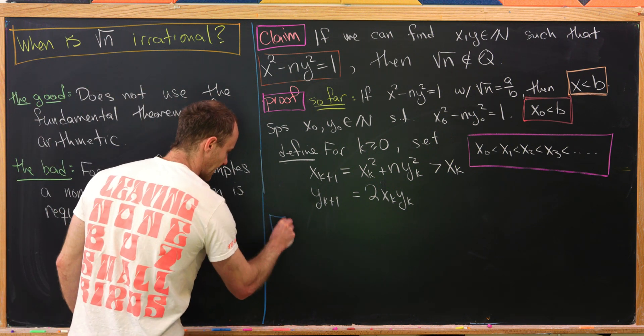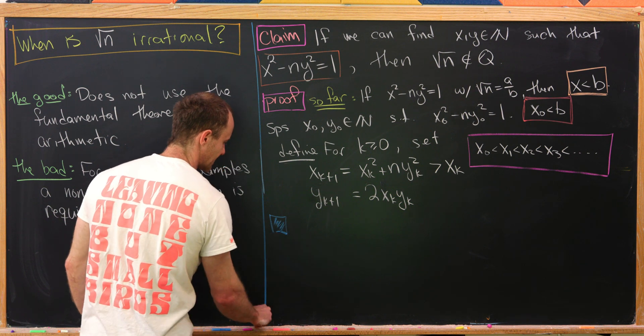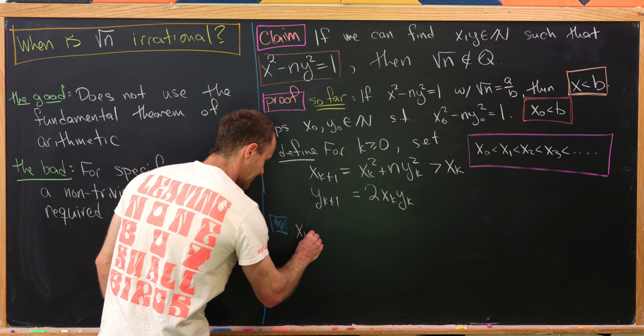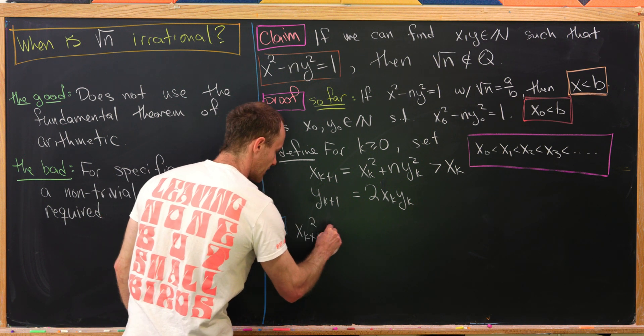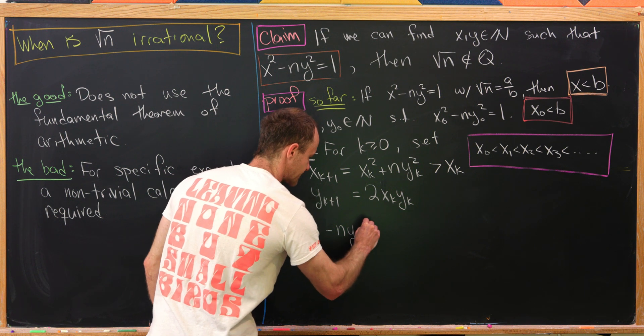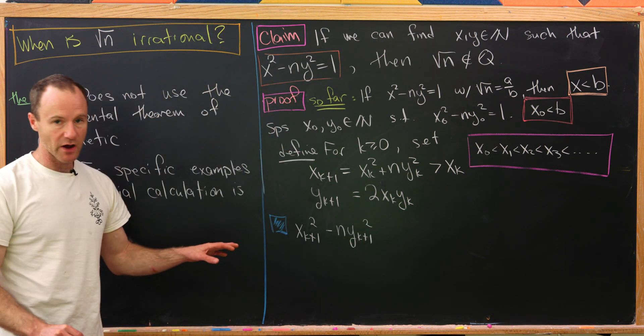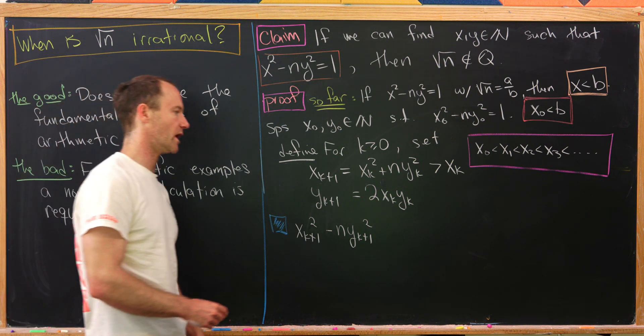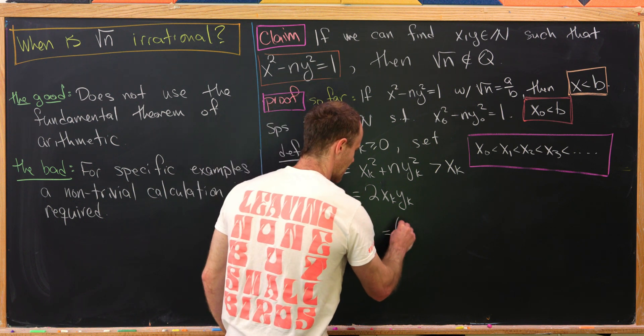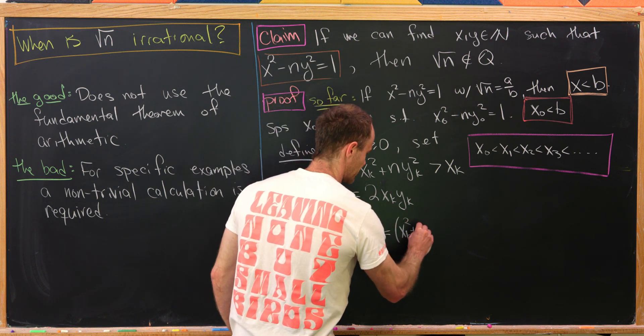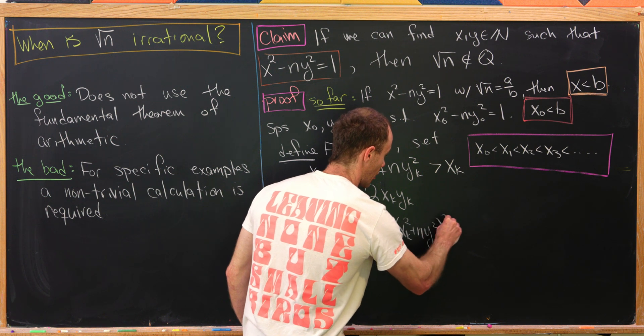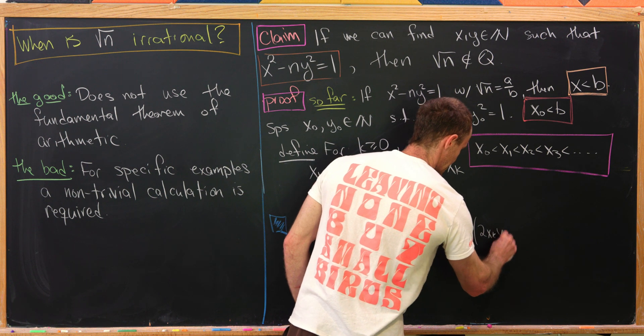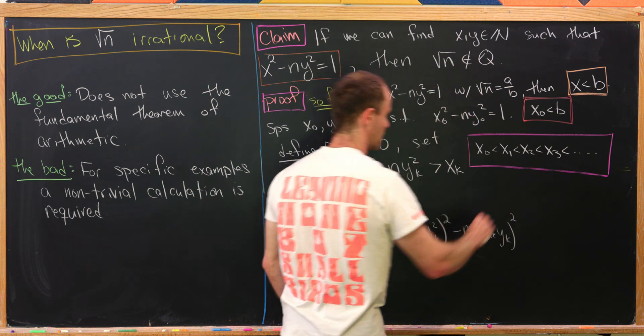I won't write down everything super carefully, but we will do the induction step. The base case is already done by our assumption. So let's look at x sub k plus 1 squared minus n times y sub k plus 1 squared. We hope that we can write that in terms of x sub k and y sub k, and that it's equal to 1 in the end. Writing this out, we have x sub k squared plus n times y sub k squared all squared, and then minus n times 2 x sub k y sub k all squared.